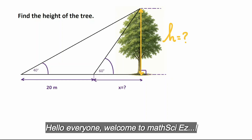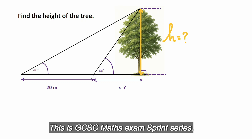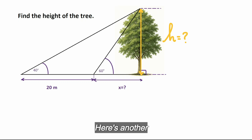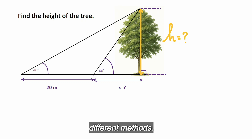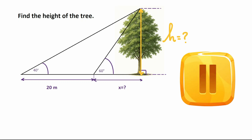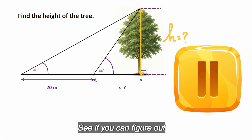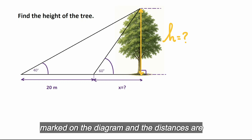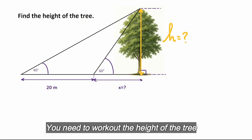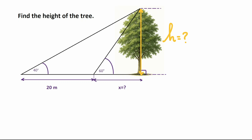Hello everyone, welcome to Maths IAC. This is GCSE Maths Exam Sprint. Here's another possible exam question — it's an interesting question that can be done using two different methods. Pause the video and give this a try. The tree is perpendicular, angles are marked on the diagram, and the distances are marked as well. You need to work out the height of the tree and also the length x.